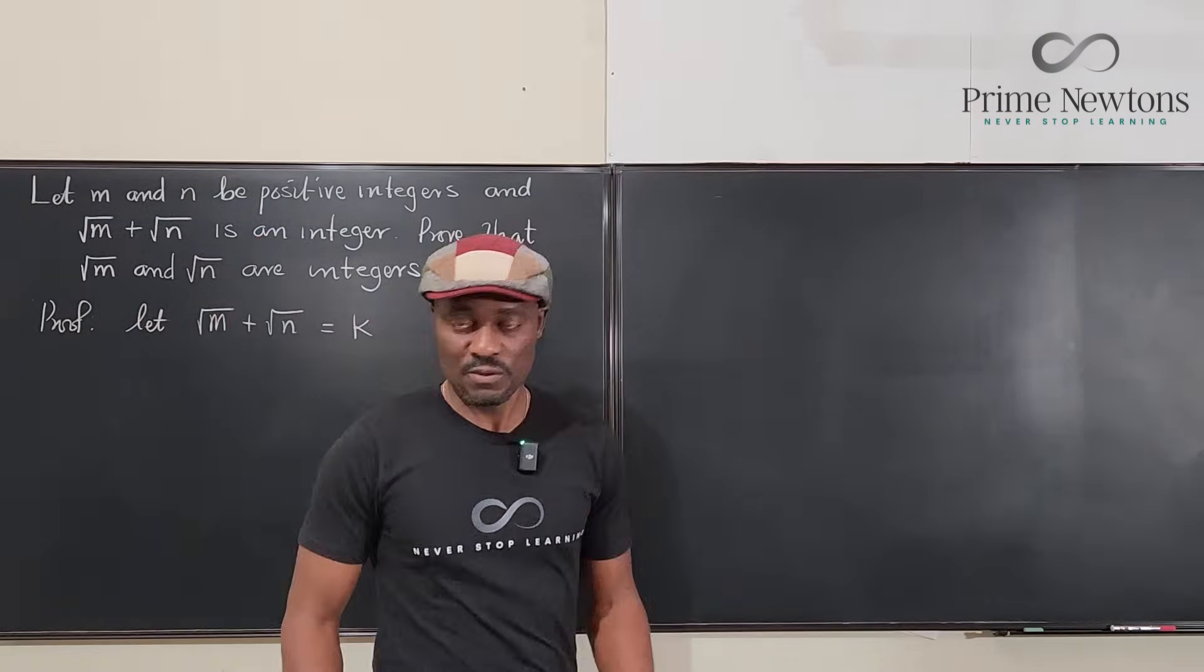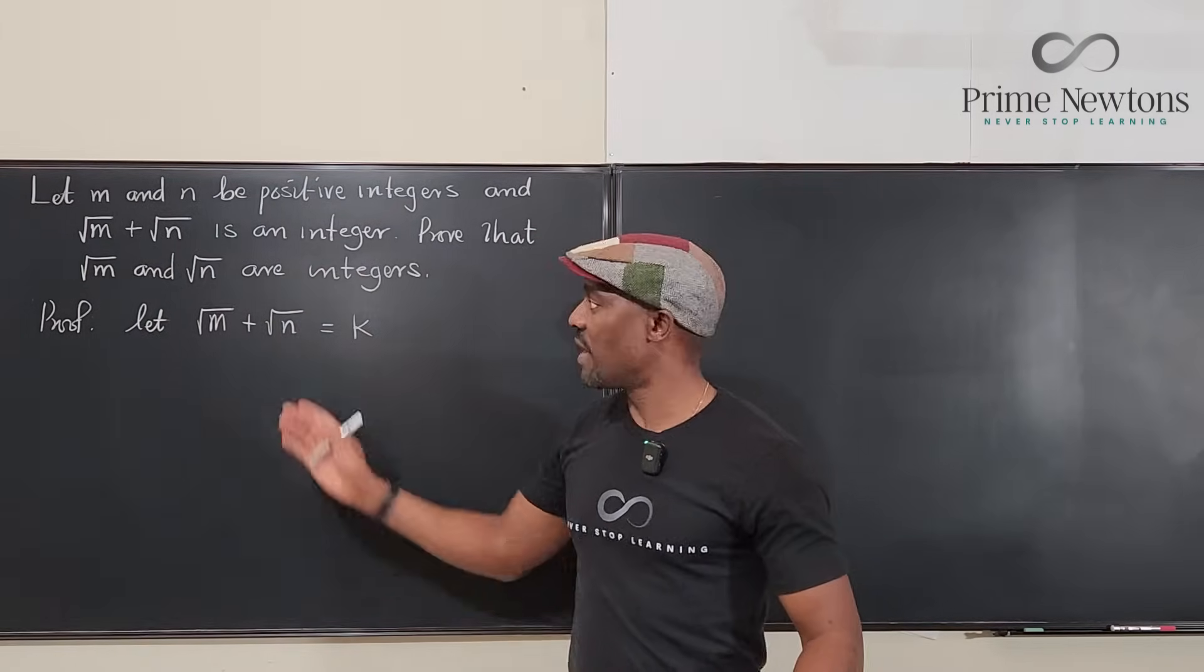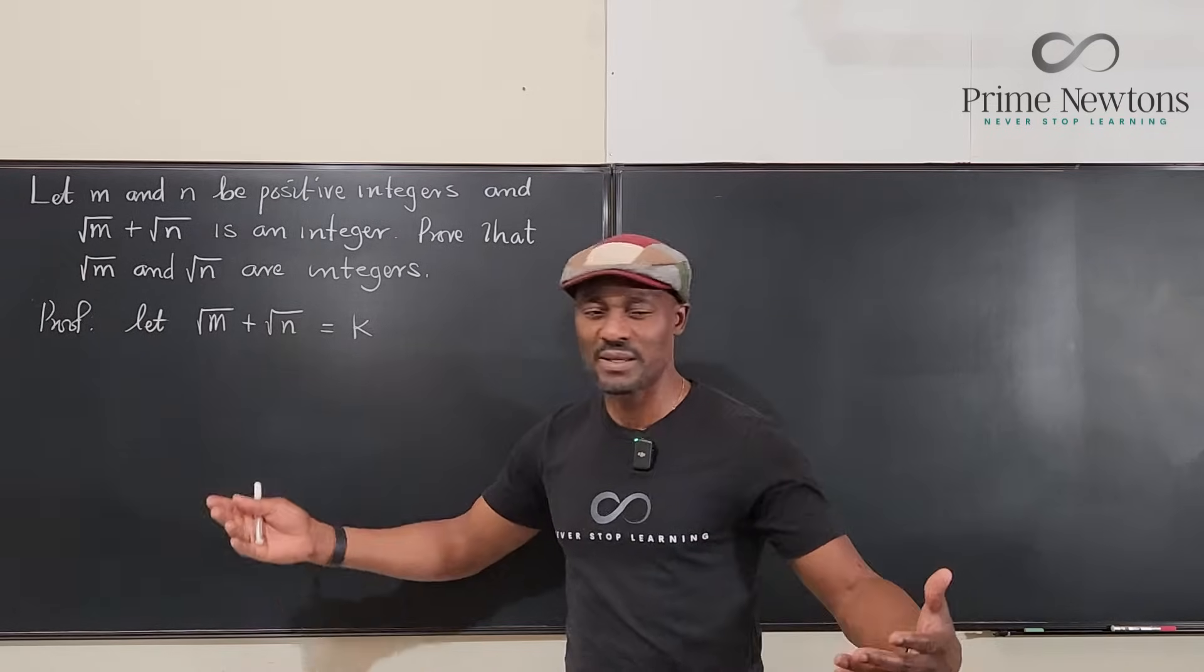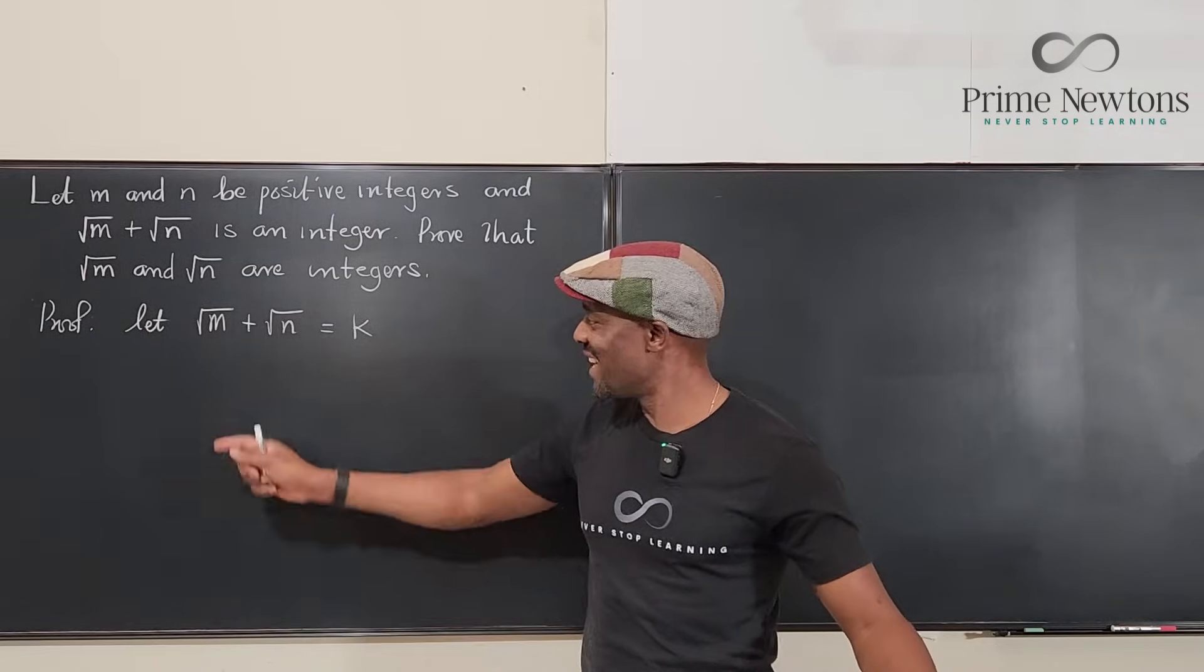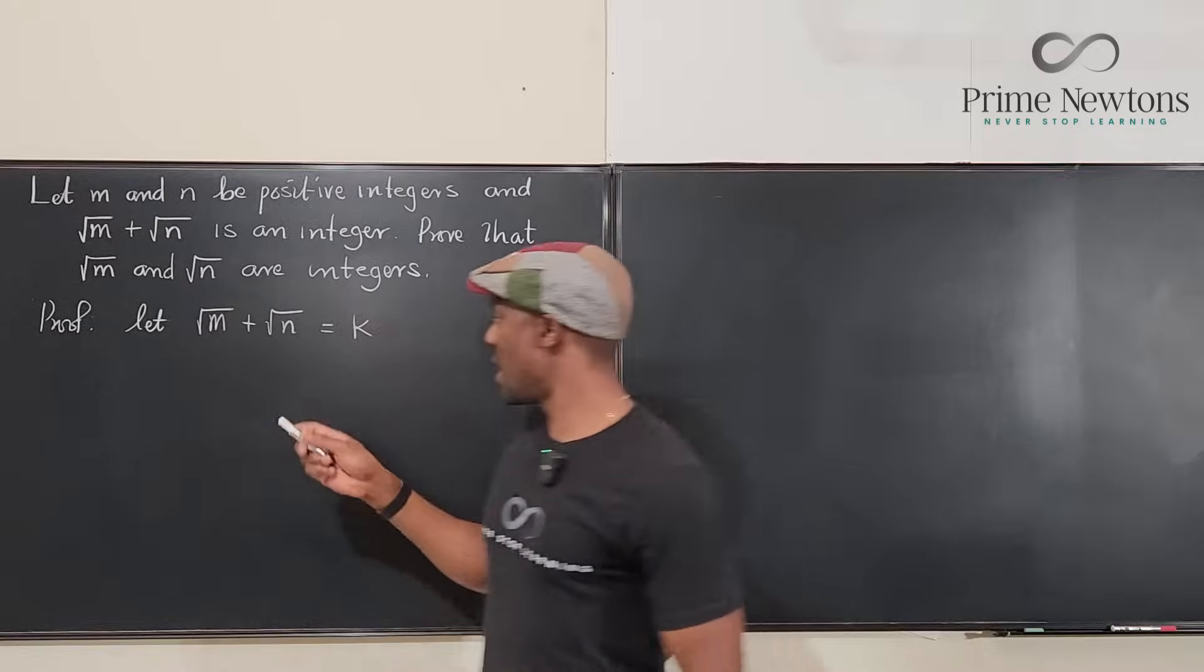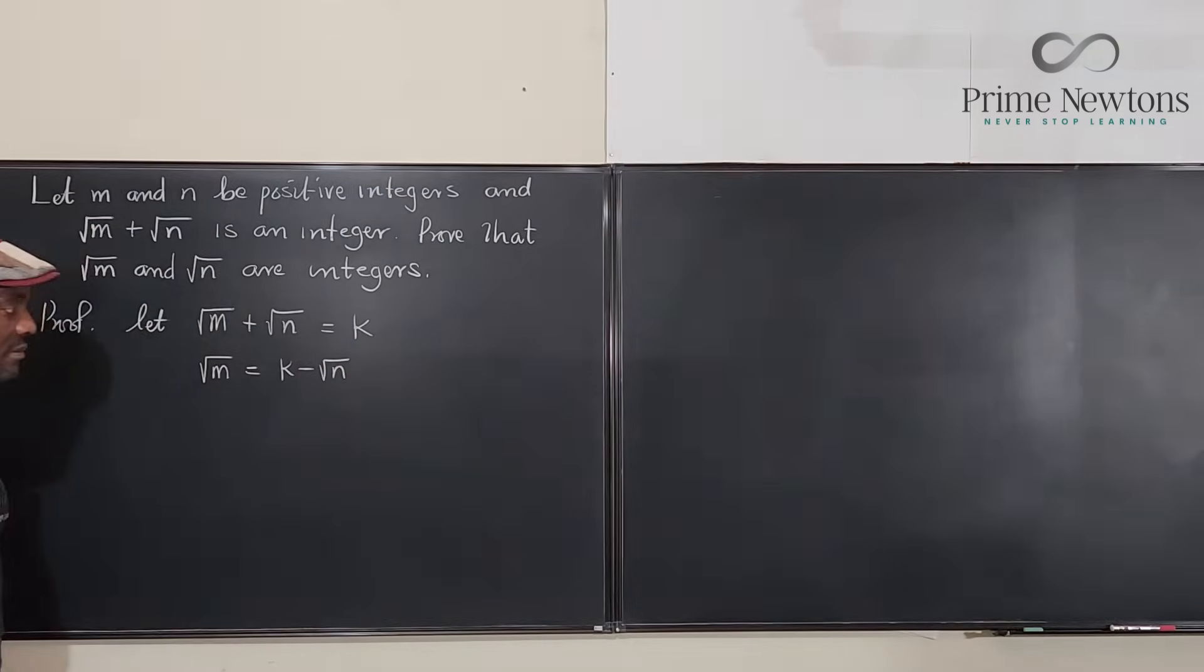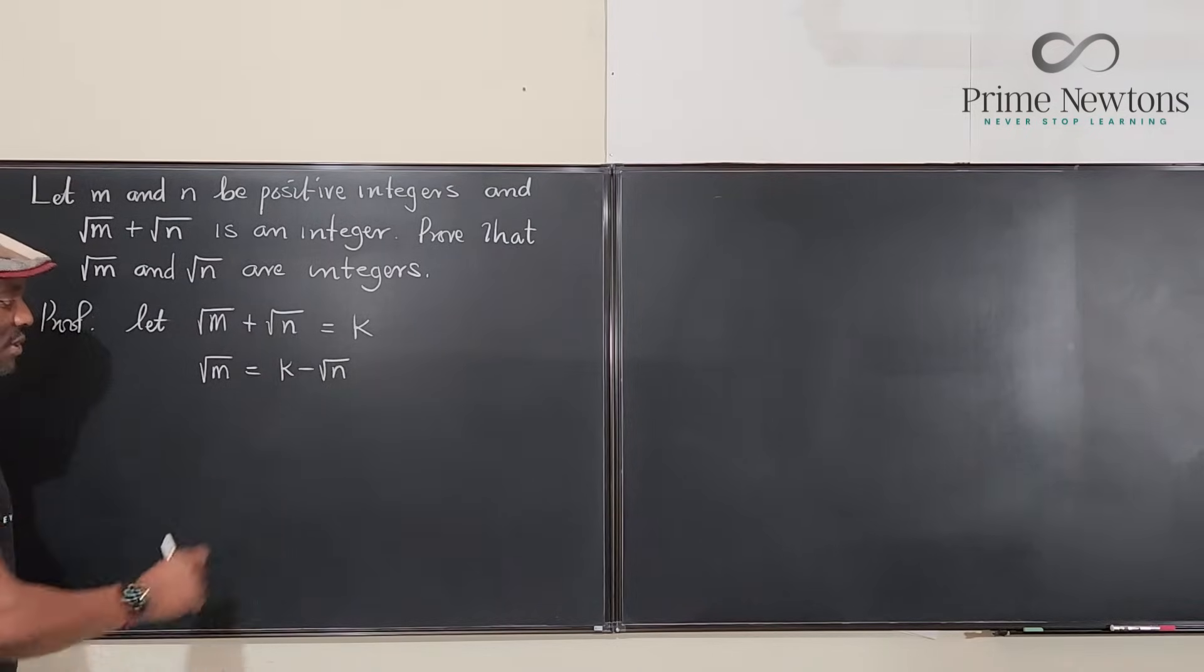First thing we're going to do, that's the statement of this is an integer. Now let's try to find one of them by solving basic algebra. Algebra 1. Let's subtract √n from both sides, so √m will be equal to k minus √n. Subtract this from both sides.